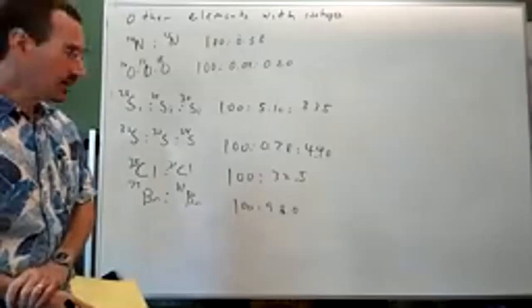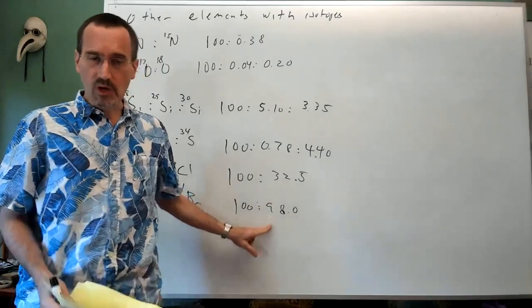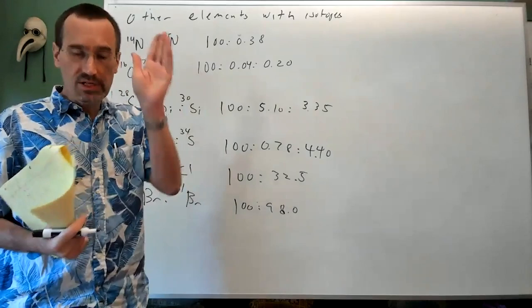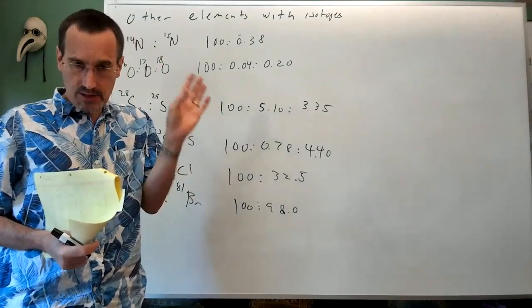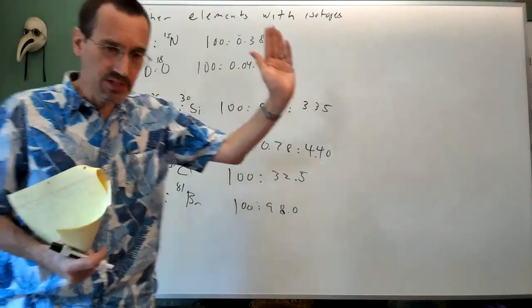But by the time we have other elements like silicon and sulfur, it starts to become noticeable. So silicon, for example, the predominant isotope is silicon 28. But you have a little silicon 29 and a little bit of silicon 30. And it's usually enough to at least be whispering in your ear that something might be up. So the ratios of silicon 28 to 29 to 30 are 100 to 5.10 to 3.35. We're going to see a significant contribution of silicon to the M plus 1 peak and a significant visible contribution to the M plus 2 peak. Ditto for sulfur, another common element in organic compounds. Sulfur is predominantly the S32 isotope. But we have a little bit of S33 and S34 to the point where the S34 is noticeable, 100 to 0.78 to 4.40.